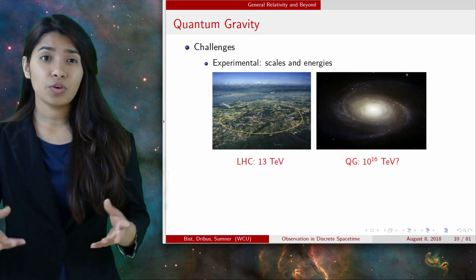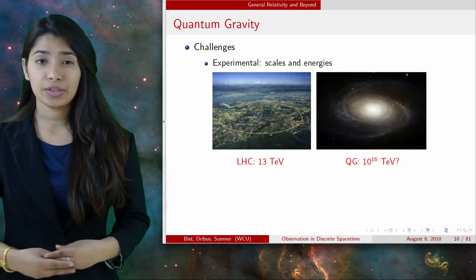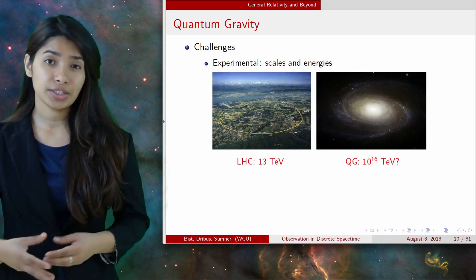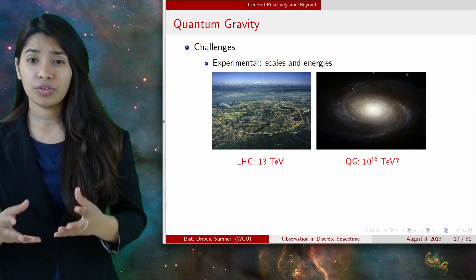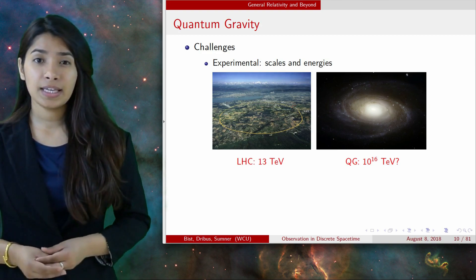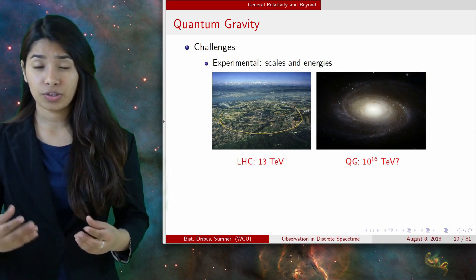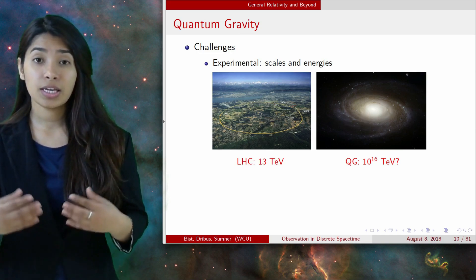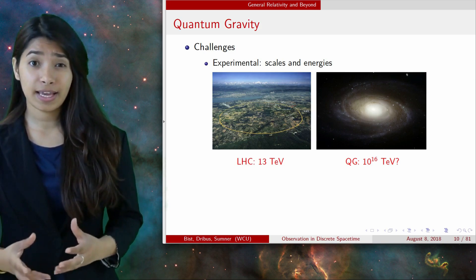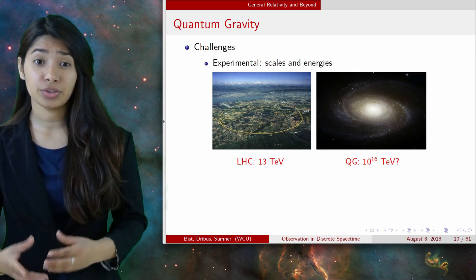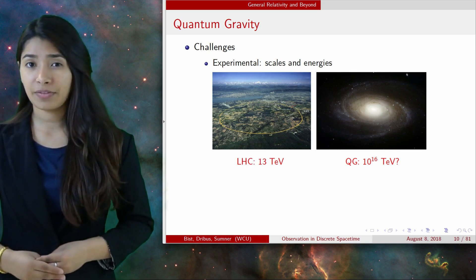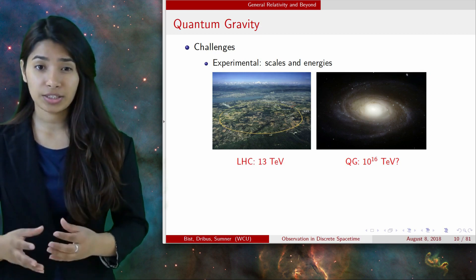First, quantum gravity involves very small scale and very high energies. For example, our most powerful particle accelerator, the Large Hadron Collider at CERN generates energy about 13 tera electron volt, but Planck's scale, which is where we would expect the quantum gravitational effect to be significant, is 15 magnitudes higher. We need a galaxy-sized particle accelerator in order to approach those energies, which is out of question.